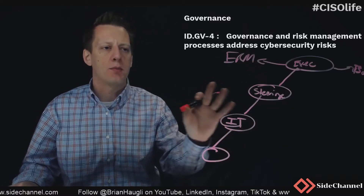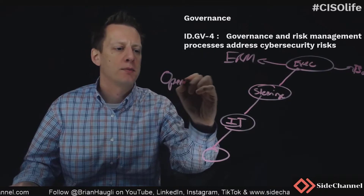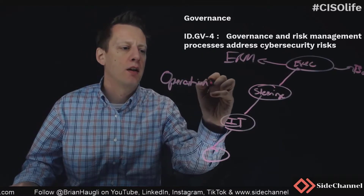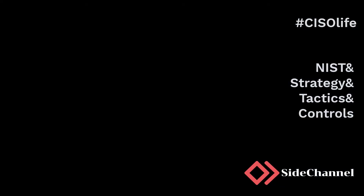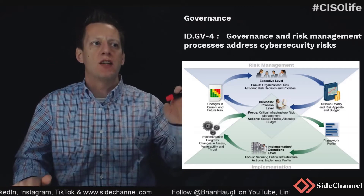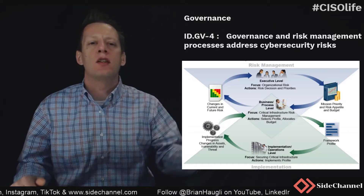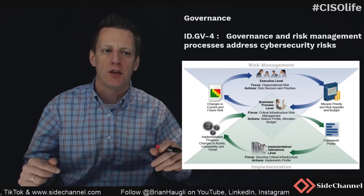You really want to have cybersecurity be considered an operational risk within the organization, and it needs to be treated as such. The fourth control within governance is the process that you have established — does it address cybersecurity risks within your overarching and larger governance and risk management processes for the organization?